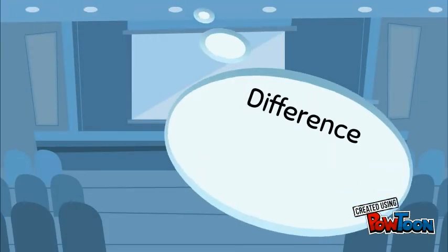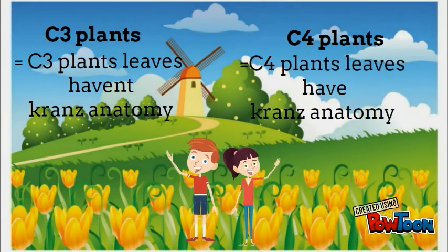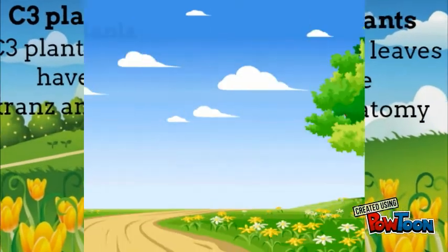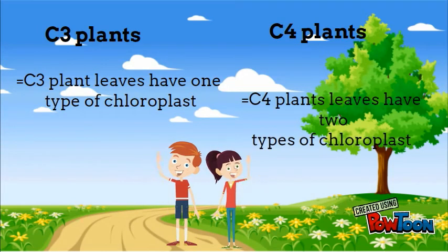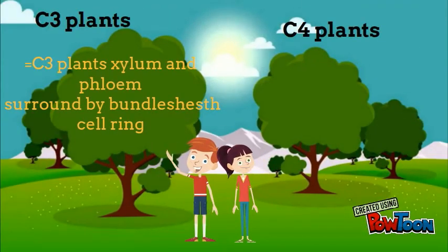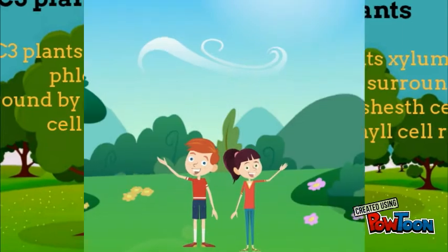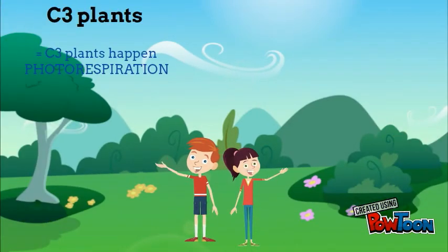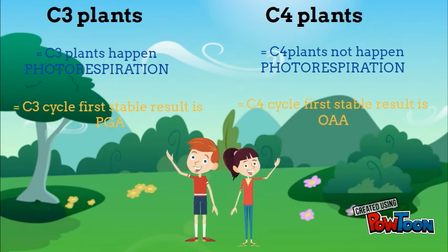Differences between C3 and C4 plants: C3 plant leaves do not have Kranz anatomy; C4 plant leaves have Kranz anatomy. C3 plant leaves have one type of chloroplast; C4 plant leaves have two types of chloroplasts. In C3 plants, xylem and phloem are surrounded by a bundle sheath cell ring; in C4 plants, they are surrounded by bundle sheath cell and mesophyll cell rings. C3 plants have photorespiration; C4 plants do not.